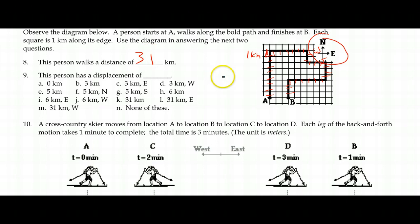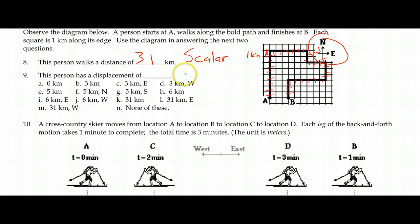It doesn't need a direction — it is a scalar quantity, ignorant of direction. So 31 kilometers. I do need the unit to say how big it is, because units are an important part throughout our study of physics. 31 kilometers is definitely very different than 31 meters. That's about 19 miles, so you can see that's quite a walk.